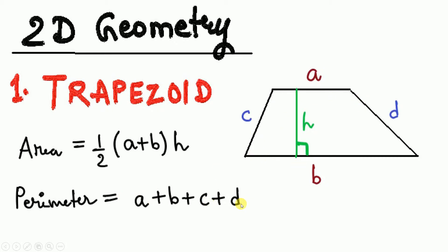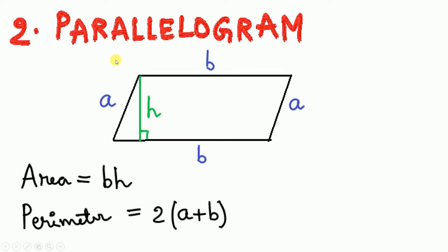The second figure is the parallelogram. Its speciality is that the opposite sides are equal and parallel — the top side is equal and parallel to the bottom, and the left side is equal and parallel to the right. The sides are a and b with vertical height h. Area = base × height, and perimeter = 2 × (a + b).